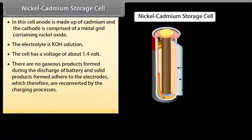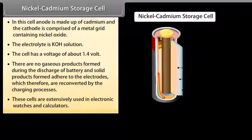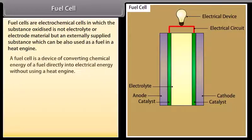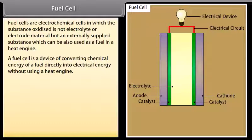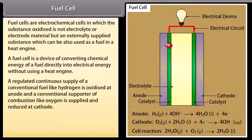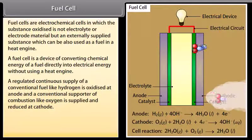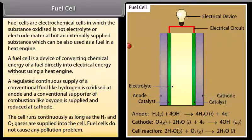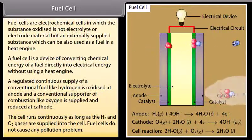Fuel cell: Fuel cells are electrochemical cells in which the substance oxidized is not electrolyte or electrode material but an externally supplied substance which can also be used as a fuel in a heat engine. A fuel cell is a device of converting chemical energy of a fuel directly into electrical energy without using a heat engine. A regulated continuous supply of a conventional fuel like hydrogen is oxidized at anode and a conventional supporter of combustion like oxygen is supplied and reduced at cathode. The cell runs continuously as long as the hydrogen and oxygen gases are supplied into the cell. Fuel cells do not cause any pollution problem.